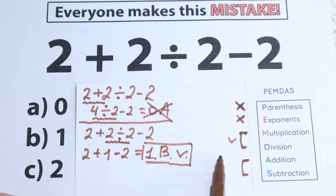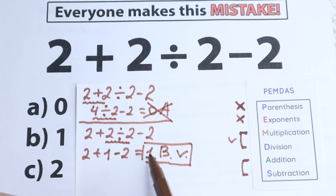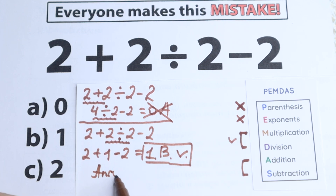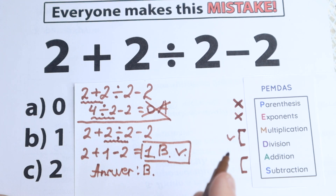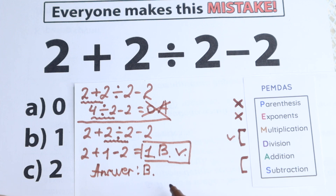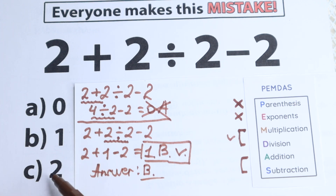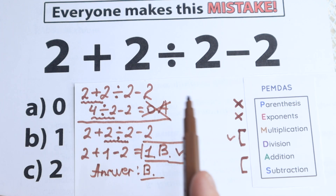I solved it according to PEMDAS, and the same answer will result if you use BODMAS. The correct answer is option B. So our answer is option B. Option A is a very bad mistake, and option C is also not correct. The correct answer is 1 — option B.